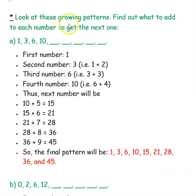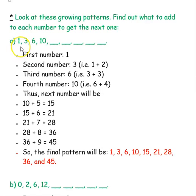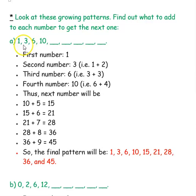First example: look at these growing patterns and find out what to add to each number to give the next one. The numbers are 1, 3, 6, 10. The first number is 1, the second number is 3. So what number do you add with 1 to get 3? If you add 2 — so 1 plus 2 is 3.